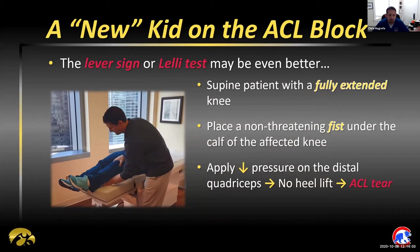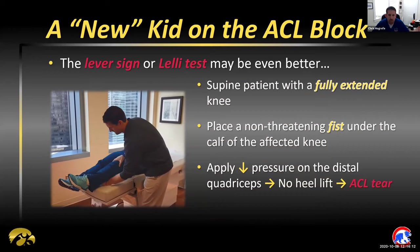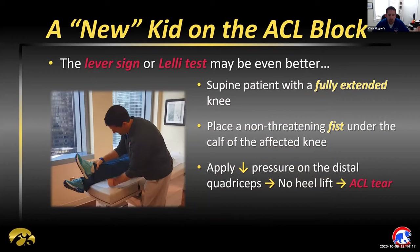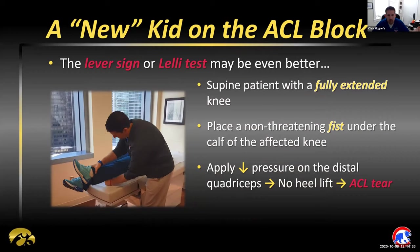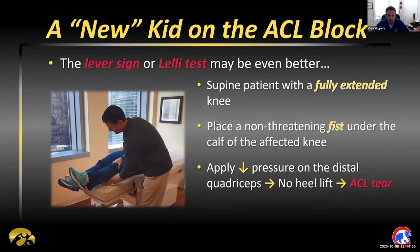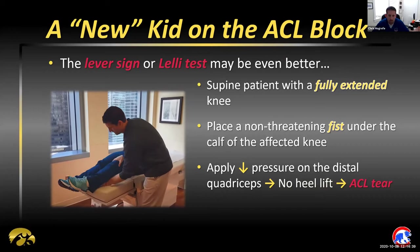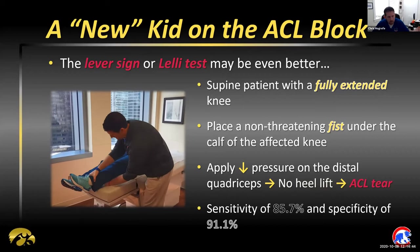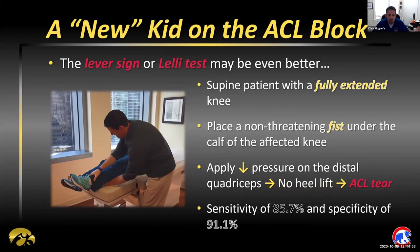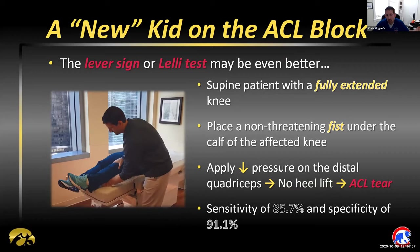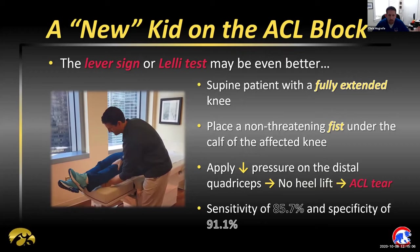The lever sign is one that many medical students, residents, and fellows may not be as familiar with. With the patient supine and the knee fully extended, place your fist underneath the calf and push down on the distal femur just above the patella, and look for rise of the heel. Since the ACL is really the only thing engaged at that point, if the heel does not lift, an ACL tear is present. There are emergency department studies that validate this as just as — if not more — sensitive than the anterior drawer and Lachman's tests, and it avoids the need to manipulate the leg around a large girth or effusion.